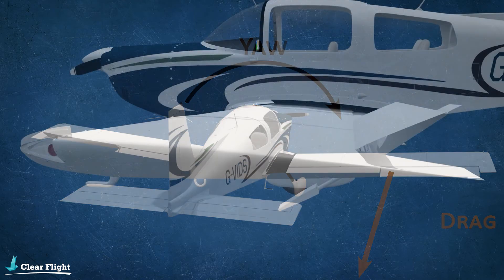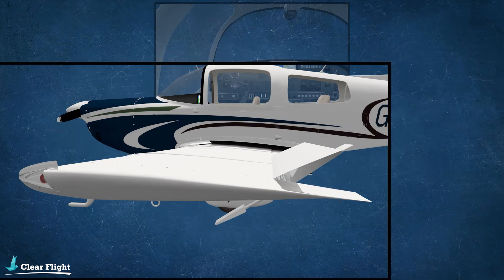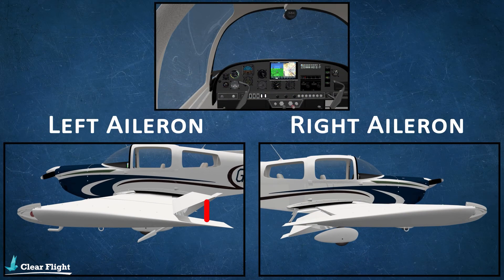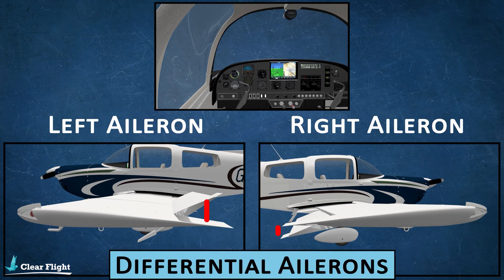Differential ailerons are an arrangement where the down-going aileron deflects a smaller amount than the up-going aileron. With a larger deflection on the up-going aileron, it generates additional form drag, helping to even out the total drag created by both ailerons. With the drag generated by both ailerons being closer to even, the adverse aileron yaw is reduced.